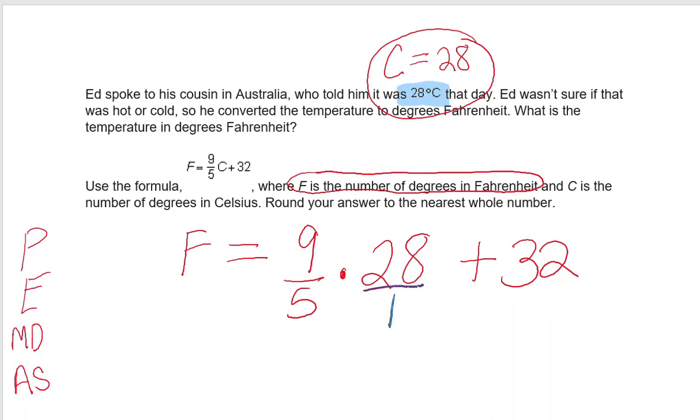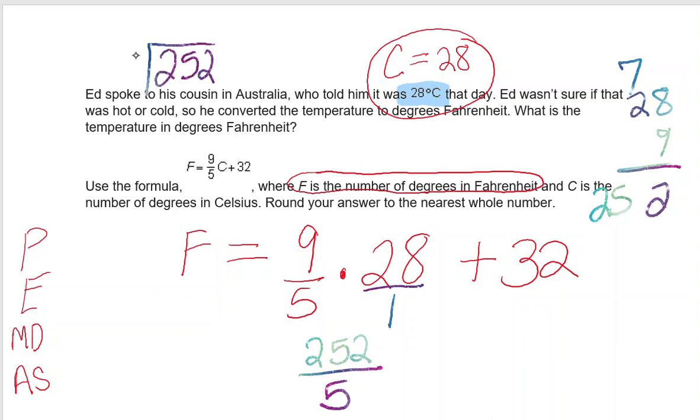9 times 28: 9 times 8 is 72, carry the 7. 9 times 2 is 18 plus 7 is 25, so that's my numerator. 9 times 28 is 252. 5 times 1 is 5, so I'm going to divide 252 divided by 5 to see what that value is.